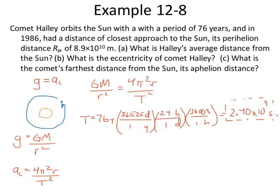We also know the closest approach to the Sun, called the perihelion distance. 'Peri' means closest; 'helion' refers to the Sun itself. This is the Sun version of periapsis, which is a more generic term. So R_P, the perihelion radius, equals 8.9 × 10¹⁰ meters. So we want to find three things.